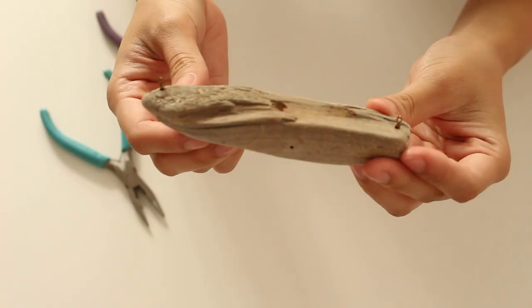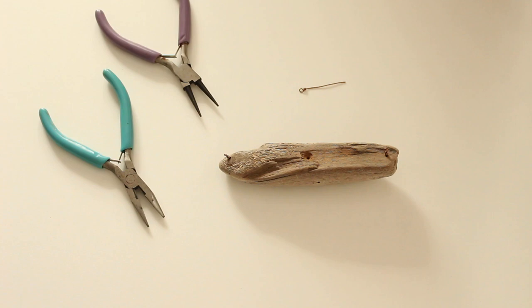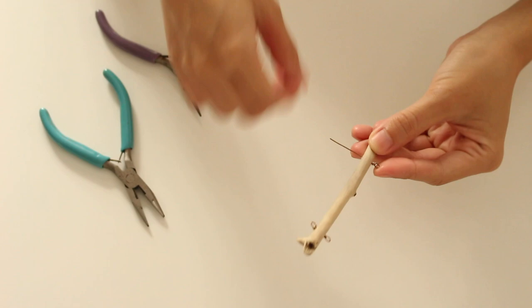I made wrapped loops to attach my fabric to the driftwood. I folded through the hole and made another loop. I also twisted wire to make a flagpole.